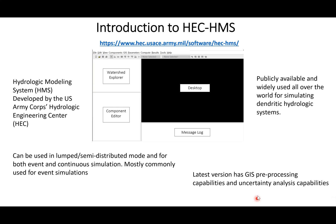HEC-HMS can be used in lumped or semi-distributed mode, and it can also be used for both event and continuous simulation, but mostly it is used for event-based simulation and specifically for hydrologic design. Earlier versions did not involve any GIS preprocessing, but version 4.4 or later has GIS capabilities, which we will briefly discuss later.